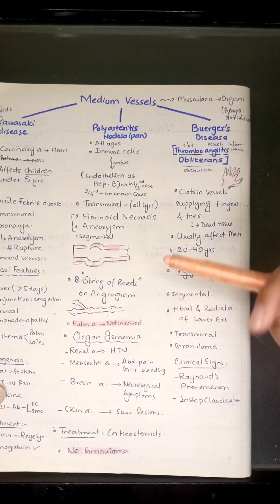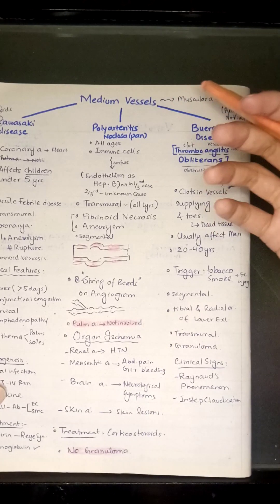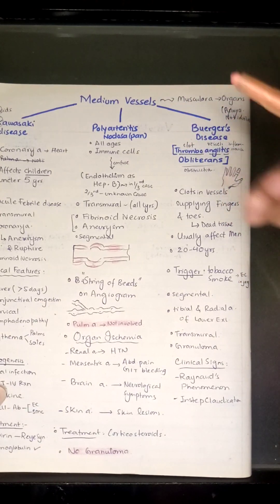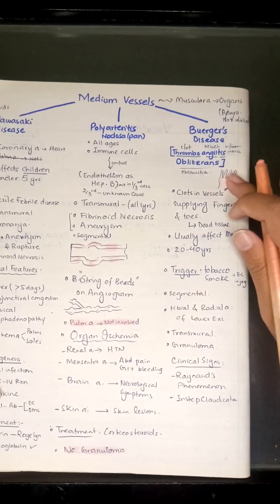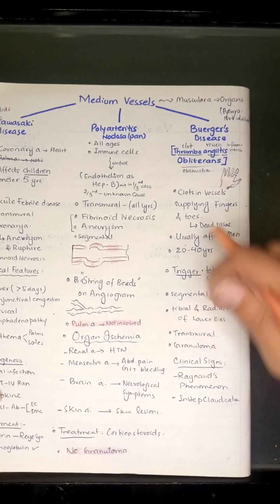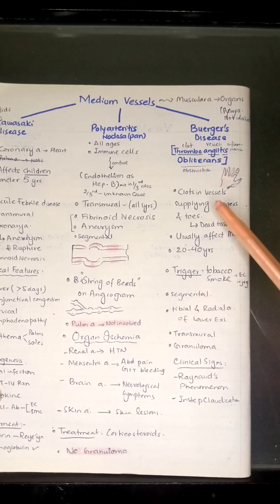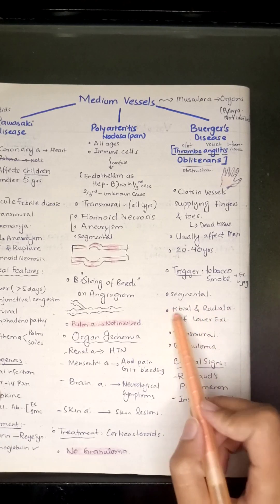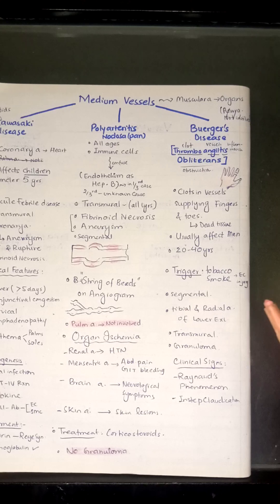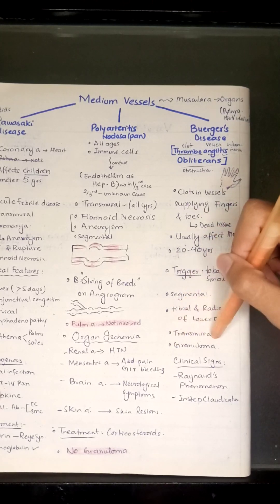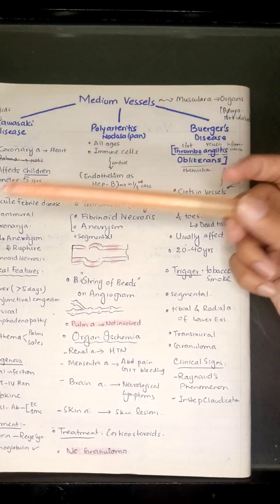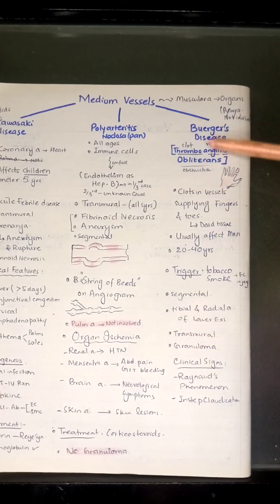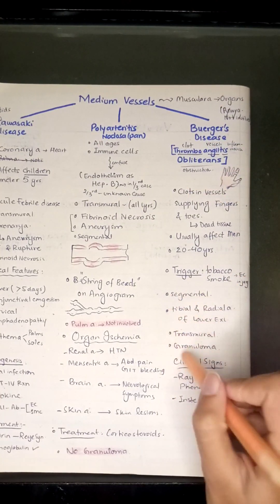Tobacco smoke produces free radicals, which cause endothelial cell injury, leading to Buerger's disease. Buerger's disease is segmental, similar to PAN. It most often affects the tibial artery and radial artery. It is also transmural, as seen in PAN and Kawasaki disease.